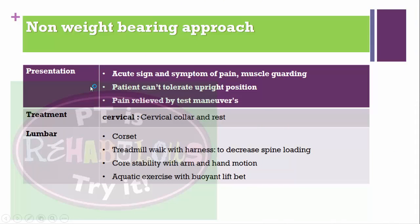For the non-weight bearing approach: when a patient is in an acute stage with signs and symptoms of pain, muscle guarding, and is not able to tolerate an upright position, we use a non-weight bearing approach. Pain relieved by manual testing also indicates this approach. As treatment, we use a cervical collar and rest; for lumbar, we can give a corset. The patient can walk on a treadmill with a harness to decrease spine loading, with arm abduction and hand motion, and aquatic exercises without a buoyant lift belt.